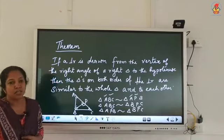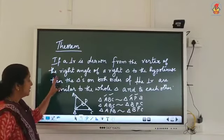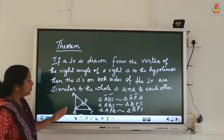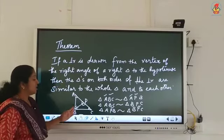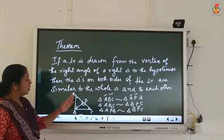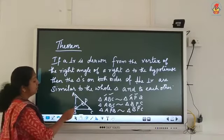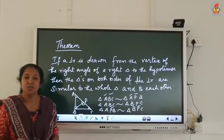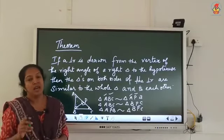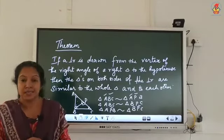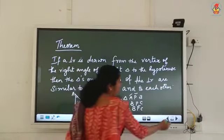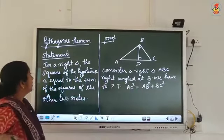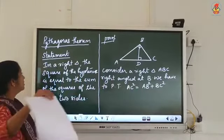So, if a perpendicular is drawn from the vertex of the right angle of a right triangle, then both the triangles are similar to the whole triangle and both the triangles are also similar to each other. Now we are going to prove the Pythagorean theorem.